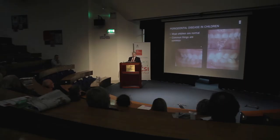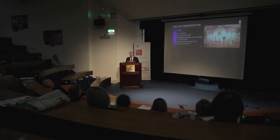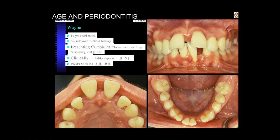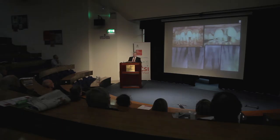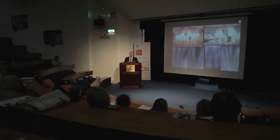Most children are normal — common things are common — and the majority of young patients have only gingivitis, which can be corrected by simple measures. Here's a case of a 15-year-old boy with no relevant medical history presenting with loose teeth, drifting, spacing, and red gums. He has quite a bit of mobility in his front teeth, significant spacing in the lower front, and his teeth have moved significantly. When we look at the x-rays, we see he's lost a significant amount of bone support — and he is only 15 years old. In the older days this was known as juvenile periodontitis.